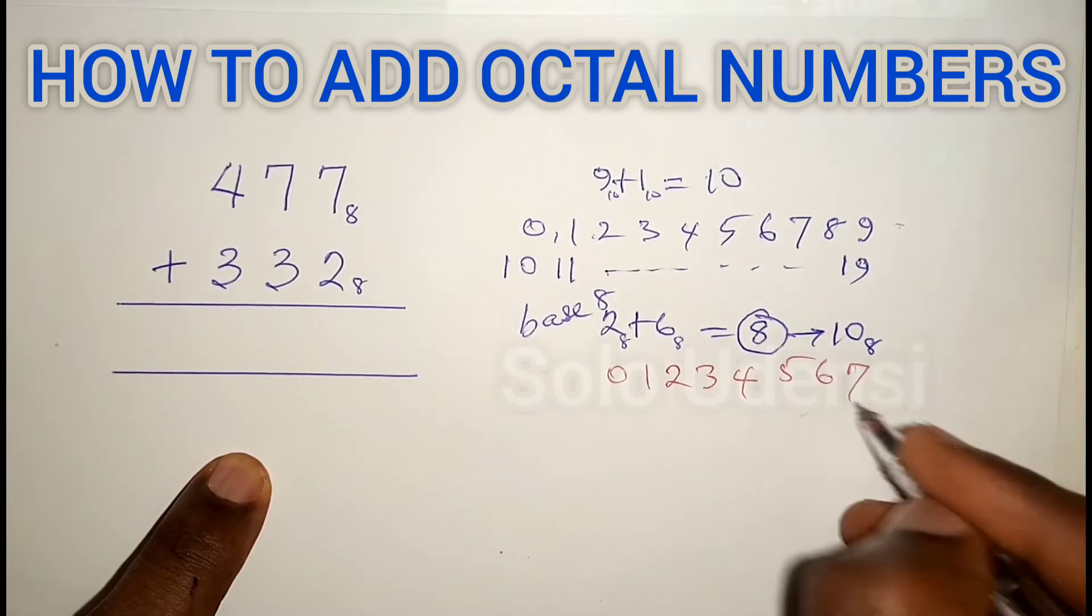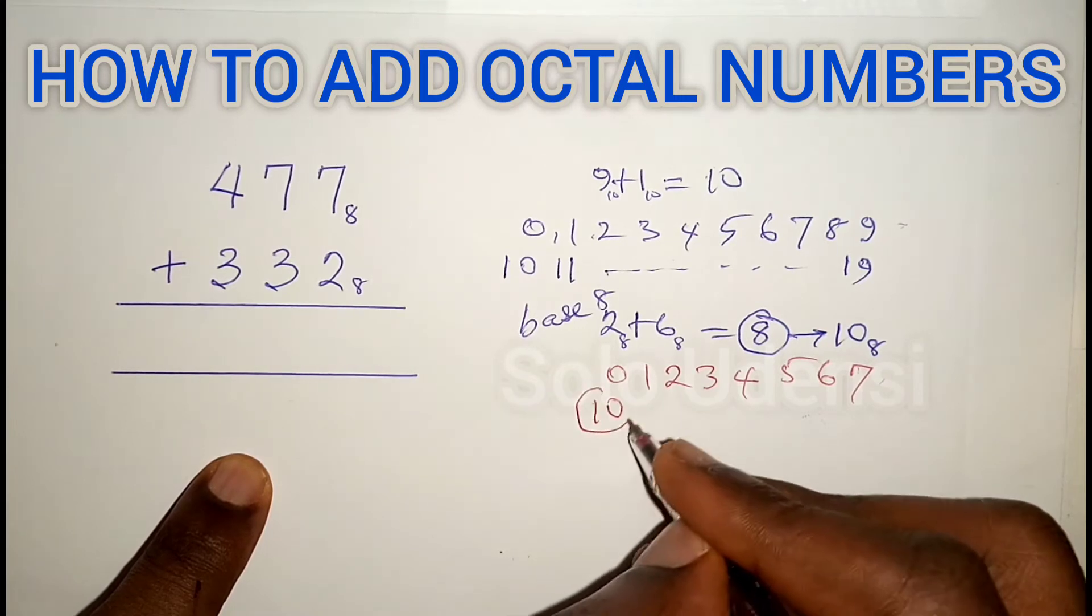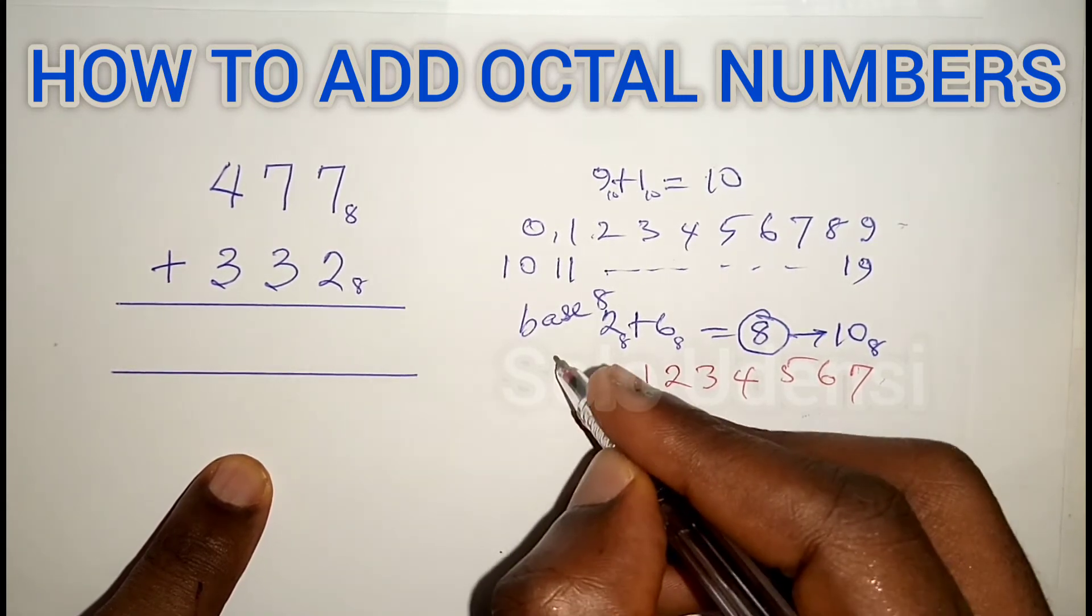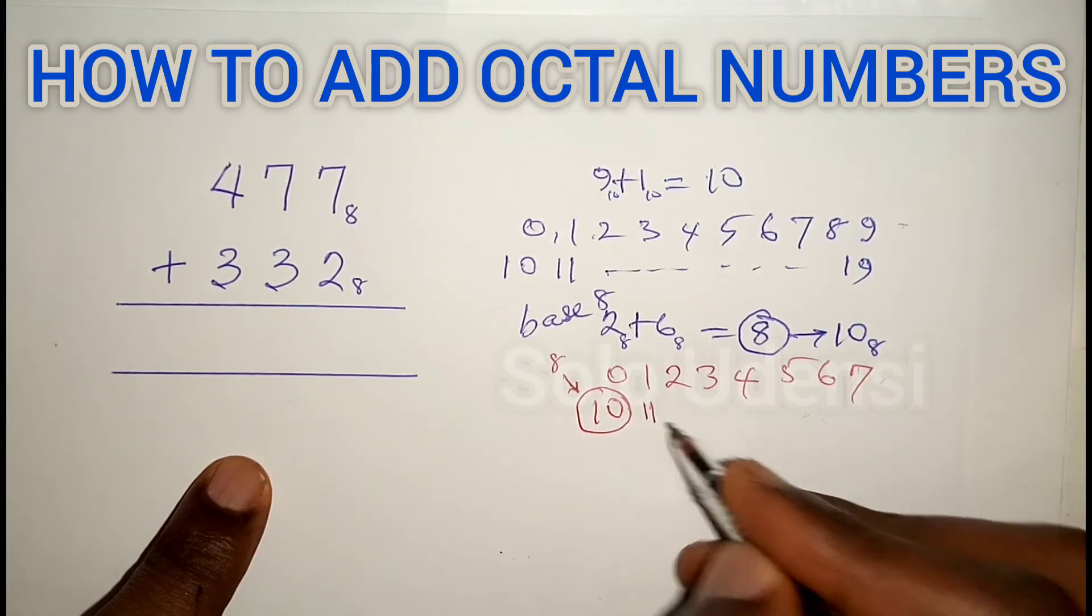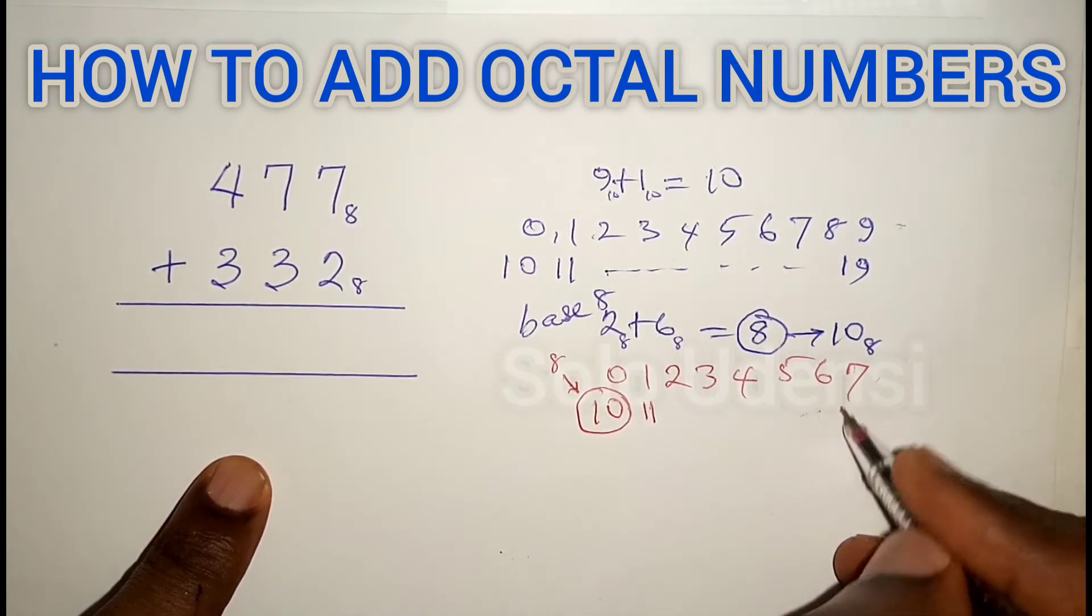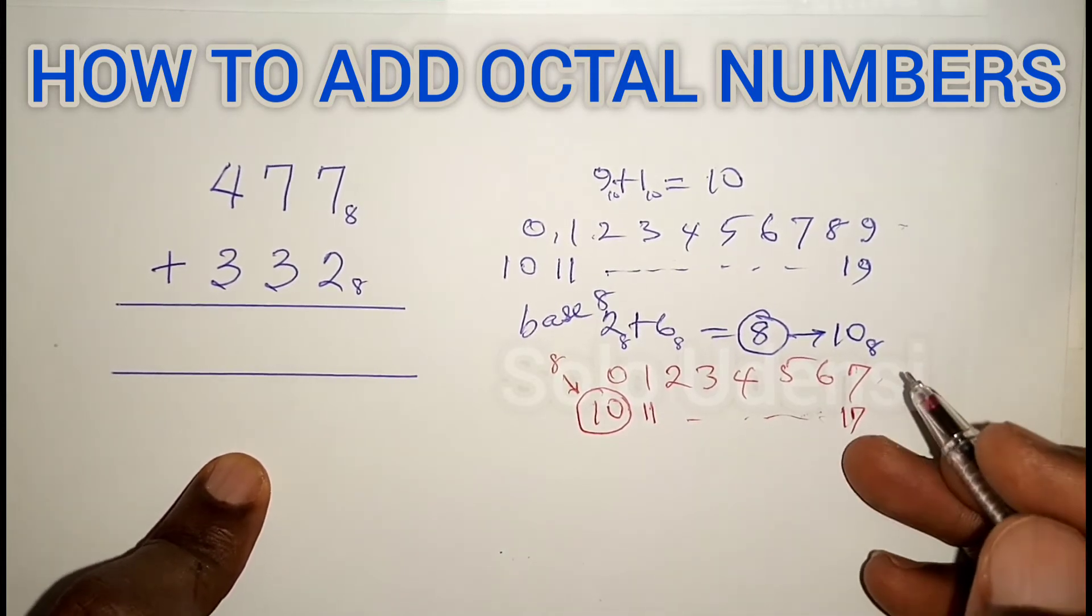The eighth one we'll call 10, the ninth one we'll call 11, until we reach 17, then we continue again in that fashion.